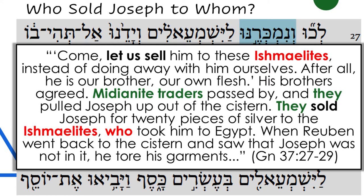When Reuben went back to the cistern and saw that Joseph was not in it, he tore his garments. Who exactly sold Joseph into slavery? The grammar implies it was the Midianites who pulled Joseph out of the cistern and sold him to the Ishmaelites — so what role did the brothers play? Yet we know from earlier in the context that the brothers wanted to sell him. What we think happened is that there were two versions of this story that have been fused together a little less than elegantly.